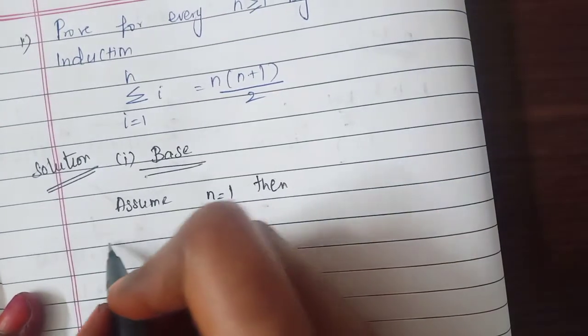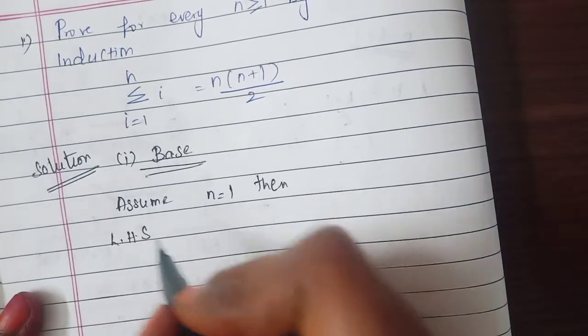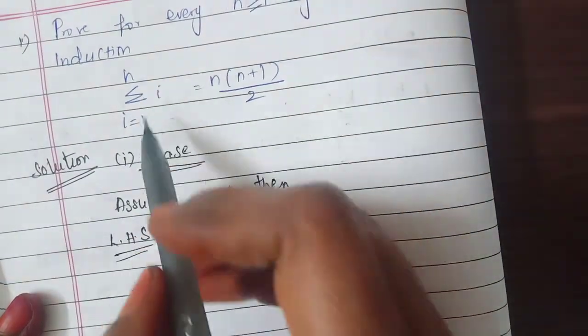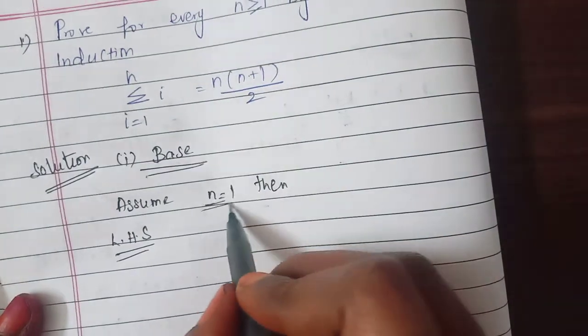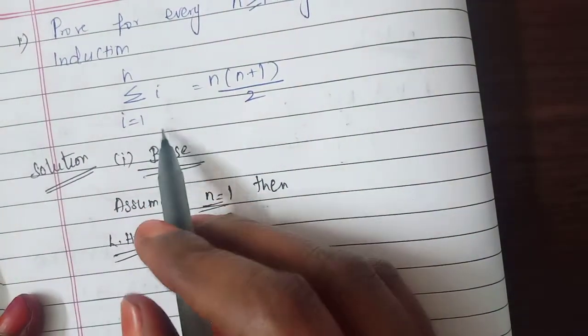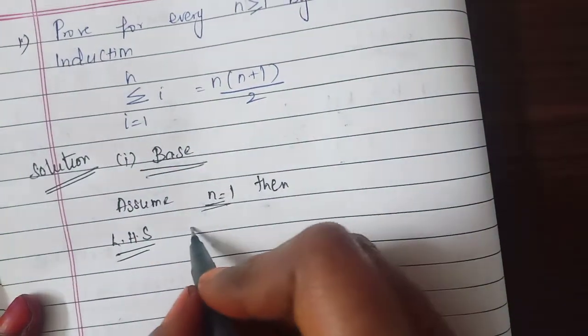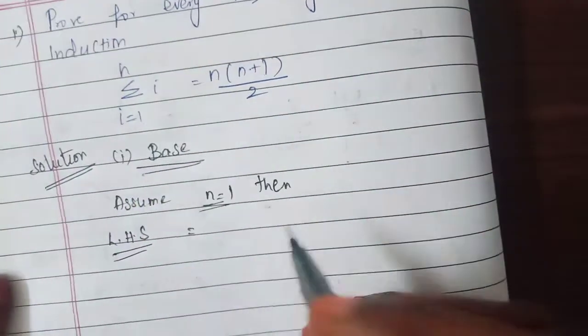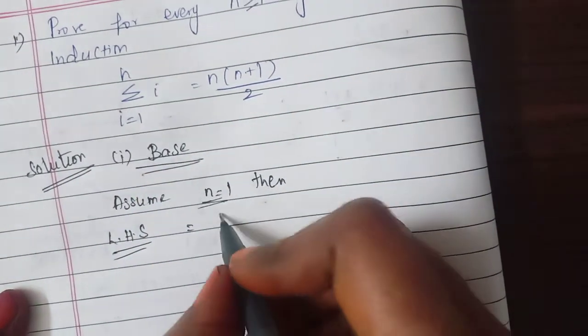Then we will see LHS is 1. So when we see n equal to 1, substitute n equal to 1 in LHS, it tells you 1.